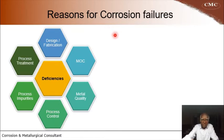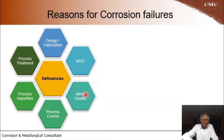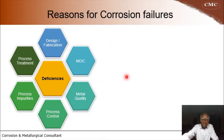Reasons for corrosion failure include deficiencies in design, material of construction, metal quality, process control, process impurities, and process treatment. We will see at the end which of these reasons this case study belongs to.